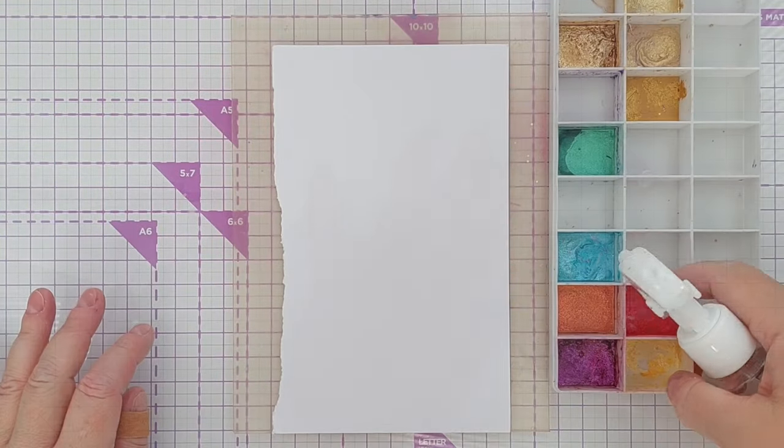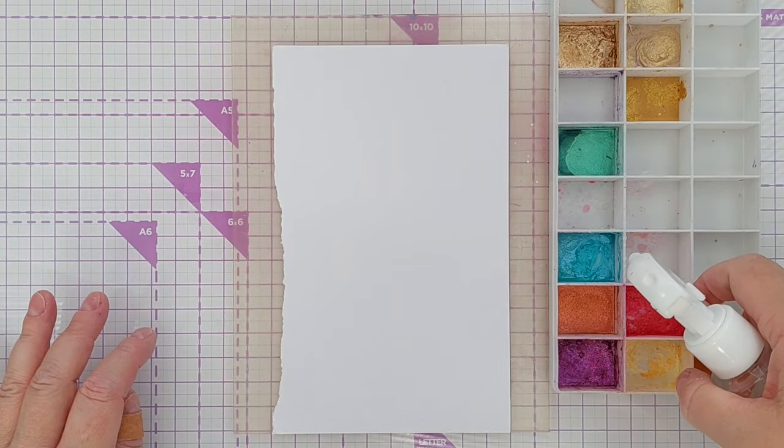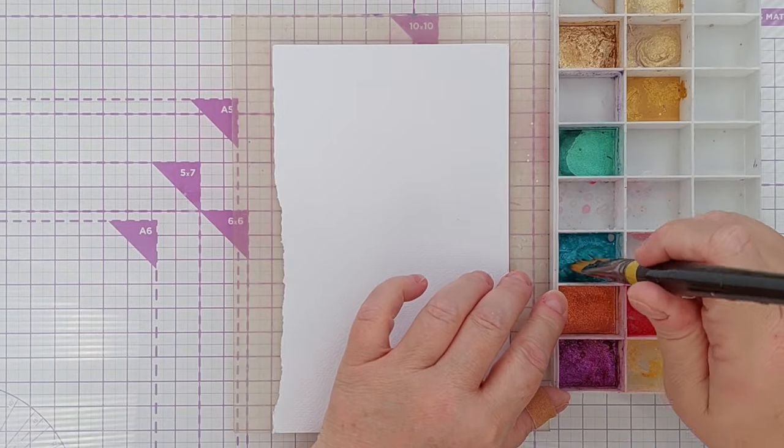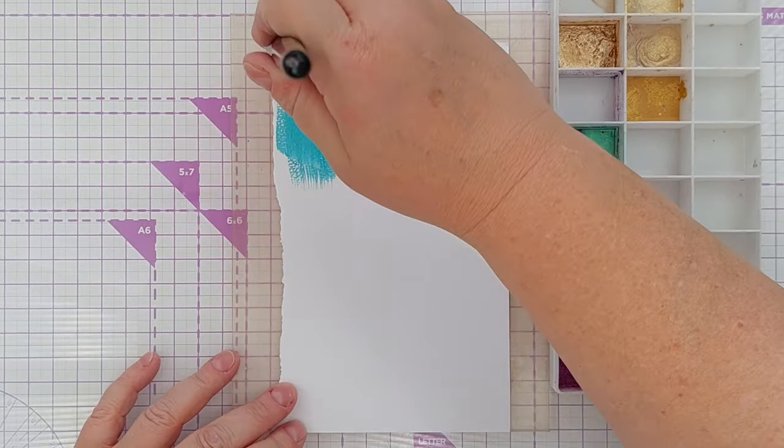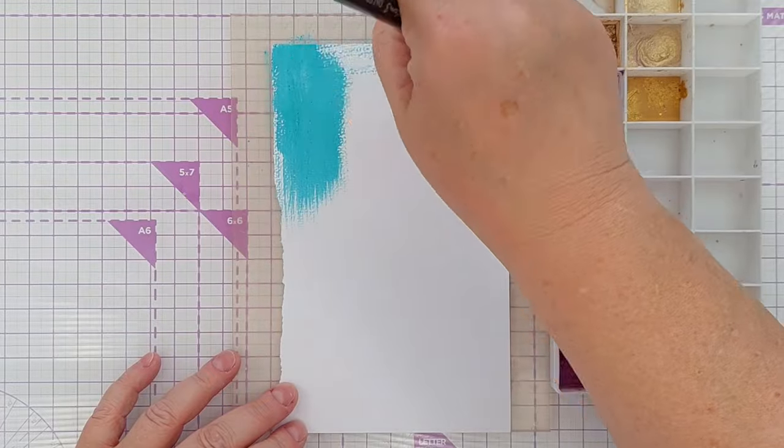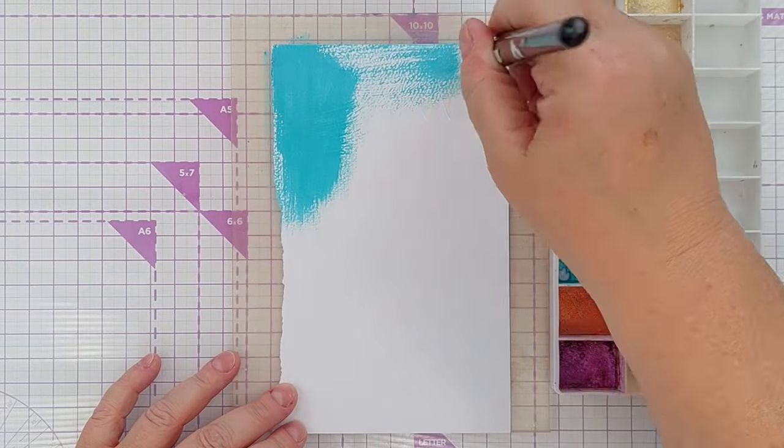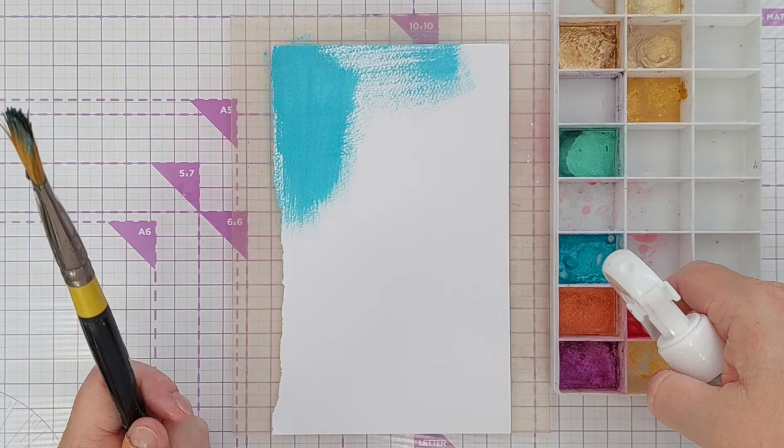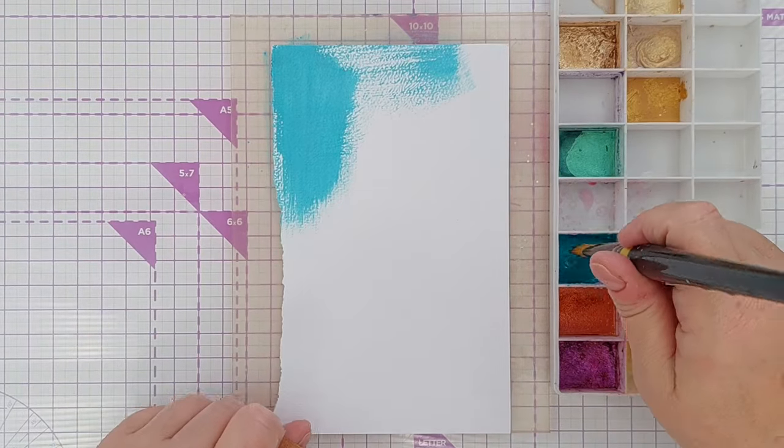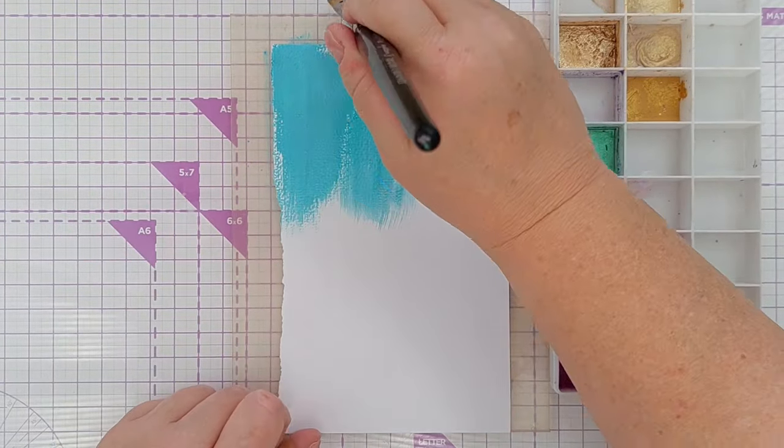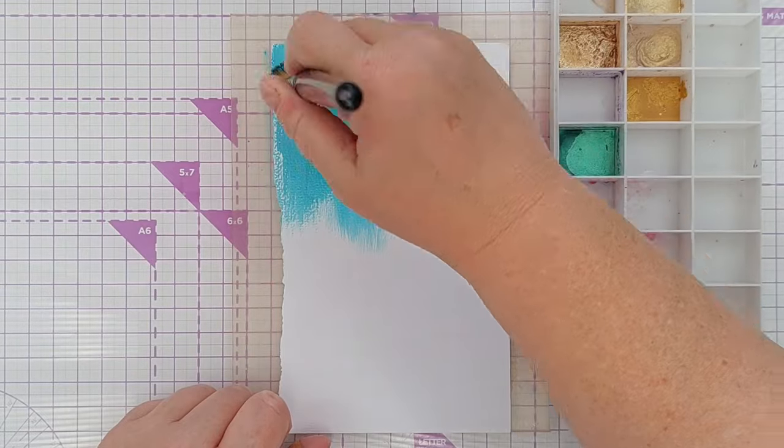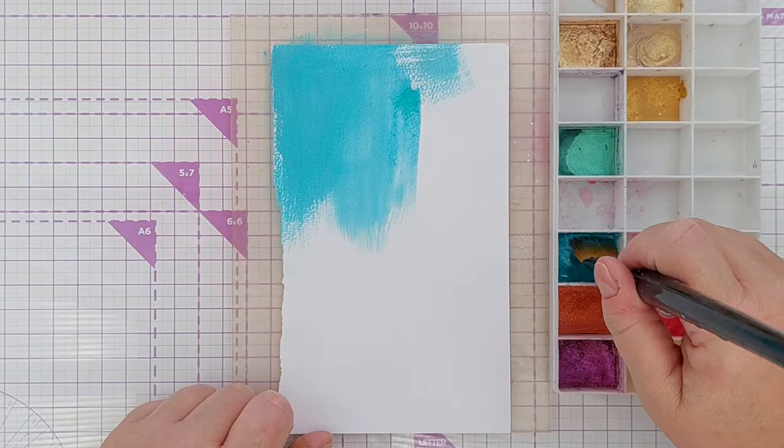For this card I decided to use up another paper scrap. This is a piece of hammered textured white cardstock. I popped it on my grid mat and then painted on some pigment powder paints. These paints I made in my pigment powders 101 series which I will link in the video description below.